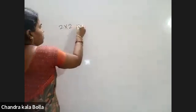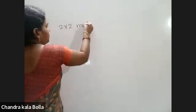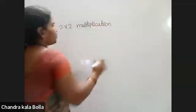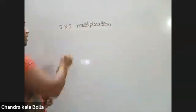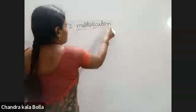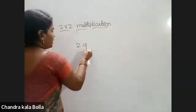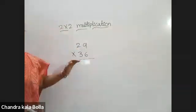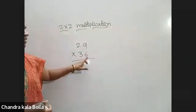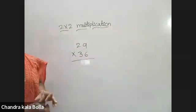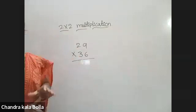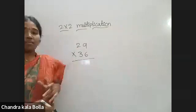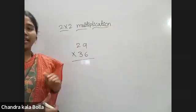2x2 multiplication involves any 2 digits. For example, we will discuss 29 into 36. We will discuss regular multiplication. The first step: 6 and 29. In 2x2 multiplication, we work in the up or down direction. If you want to save time, you can save your time — it's simple.